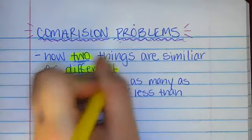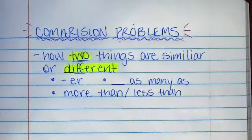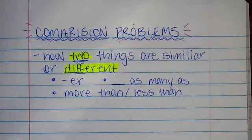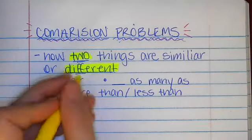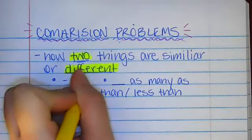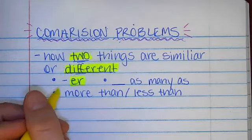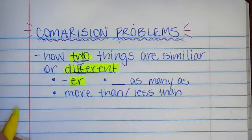So when you are looking at comparison problems or even when you're reading, you know that when things are being compared, the words would be ending in E-R, like faster, slower, taller, shorter. That's a comparison because those words end in E-R.